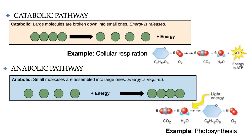Cellular respiration is actually a type of metabolic pathway called a catabolic pathway. Metabolism in a cell is made up of two types of metabolic pathways: those that build molecules and those that break them apart. Catabolic pathways break apart larger molecules into smaller ones and release energy in the process. Cellular respiration, for example, is a series of chemical reactions that result in the breakdown of glucose into carbon dioxide and water in order to release energy as ATP.